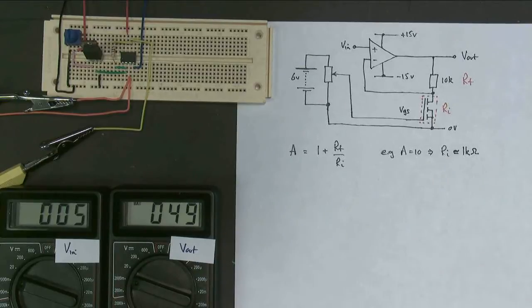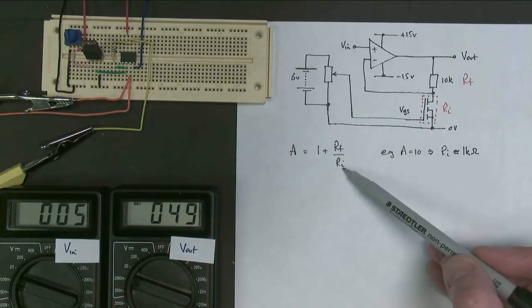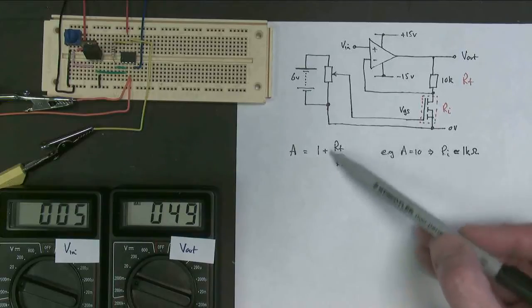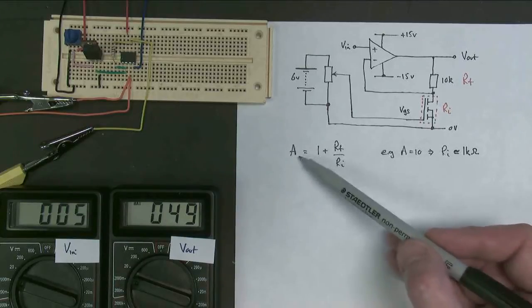Now, what happens if we change it? Well, if we make the gate source voltage smaller, this value is going to get much bigger. When this value gets much bigger, then this value gets much smaller, and the gain tends to 1.